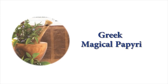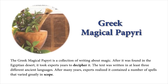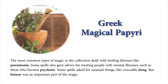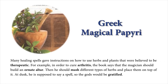Greek Magical Papyri. The Greek Magical Papyri is a collection of writing about magic. After it was found in the Egyptian desert, it took experts years to decipher it. The text was written in at least three different ancient languages. After many years, experts realized it contained a number of spells that varied greatly in scope. The most common types of magic in the collection dealt with healing illnesses like pneumonia. Some spells also gave advice for treating people with mental illnesses, such as those who became psychotic. Some spells asked for unusual things, like crocodile dung. But botany was an important part of the magic.